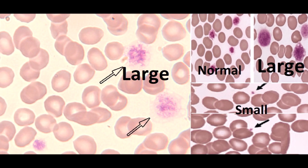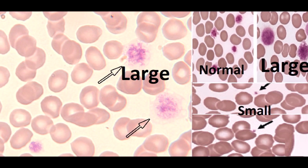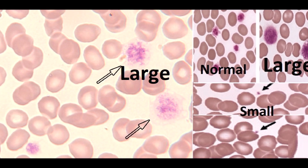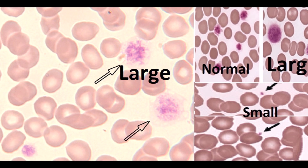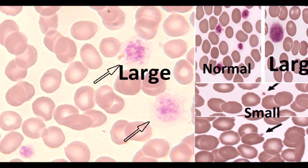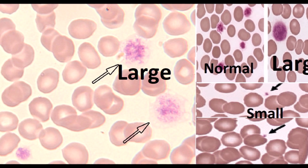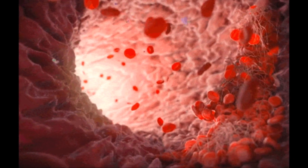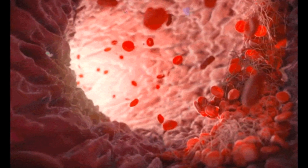Platelet distribution width (PDW) is an indication of variation in platelet size, which can be a sign of active platelet release. Larger platelets are usually relatively young and more recently released from the bone marrow, while smaller platelets may be older and have been in circulation for a few days.